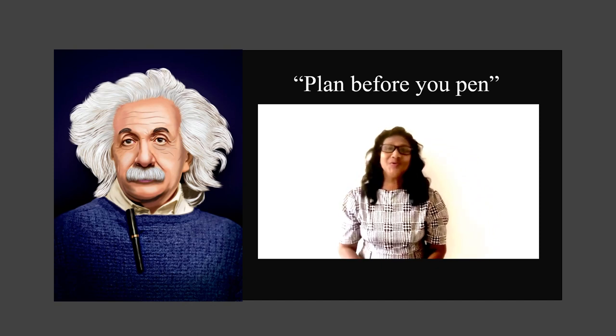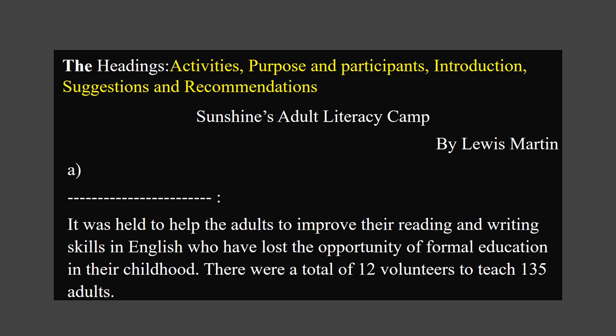Since this is the very first report you are going to write, the teacher has written a sample answer for you, but you have to do some editing. Read the following sample answer in which paragraphs are in disorder. First, provide the appropriate headings for each paragraph choosing from the given list. Next, put the paragraphs in the correct order and then write the final report in your notebook. Here are the headings: activities, purpose and participants, introduction, suggestions and recommendations — four headings in total. Now give the headings to each paragraph. Do you think you can do it within a minute? Let's try.